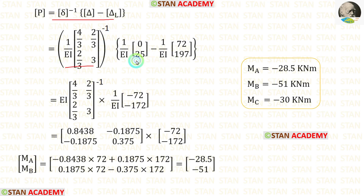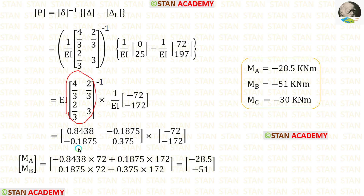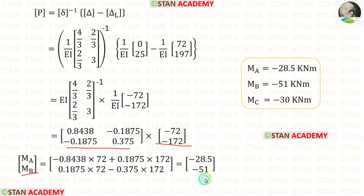We have now calculated all values. Applying them into the formula — (1/EI) inverse equals EI — and adding the two matrices, then eliminating EI, we find the inverse of the resulting matrix using a calculator. After multiplying the matrices, we get MA and MB. MC was already calculated in the first step. So all the moments MA, MB, and MC have now been determined.